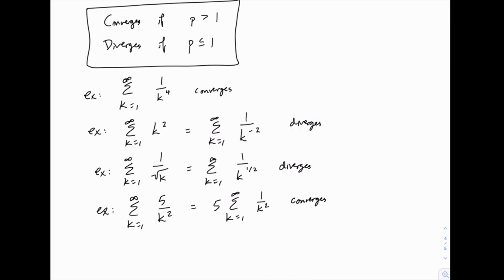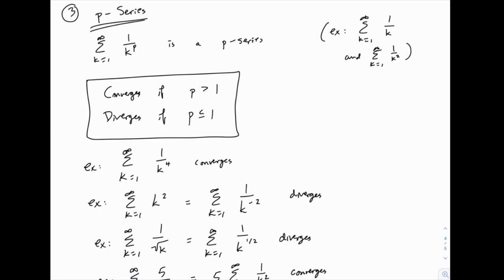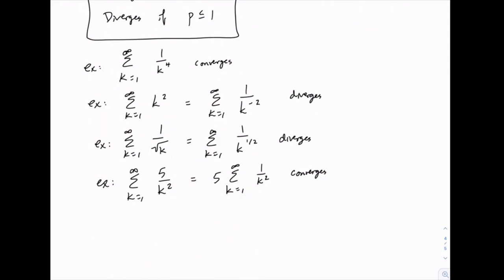So the p-series on its own is kind of limited in its usefulness, if that's all we can do with it, because the series has to exactly fit that form. If we had something like, for instance, 1 over k squared plus 4, that looks an awful lot like a p-series, specifically it looks like 1 over k squared. And we know that 1 over k squared converges, so would we think that adding a 4 in the denominator is going to change that from converging to diverging? Probably not.